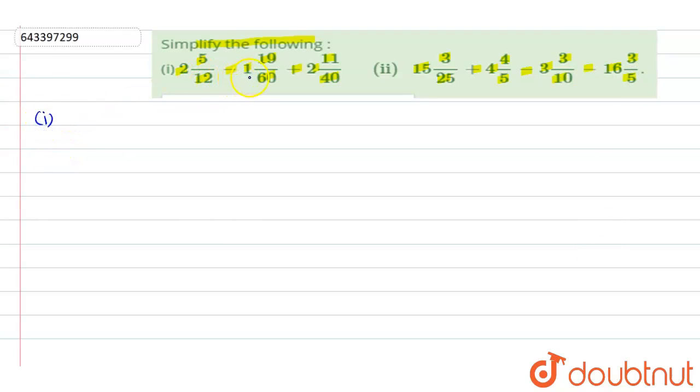First expression is given as 2 5/12 minus 1 19/60 plus 2 11/40. First we'll convert these mixed fractions to improper fractions. So 12 times 2 is 24, 24 plus 5 is 29, that is 29/12 minus, 1 time is 60 plus 19 will give us 79/60 plus, 2 times is 80, 80 plus 11 is 91/40.